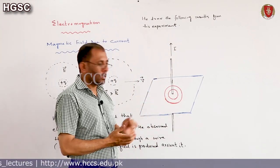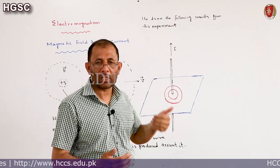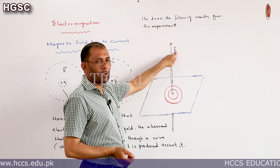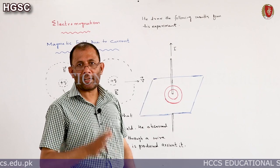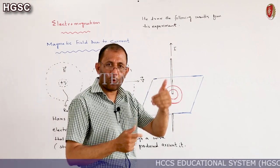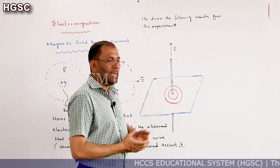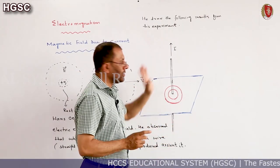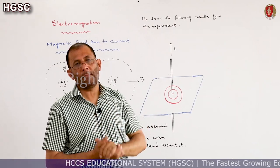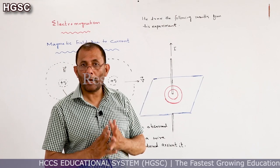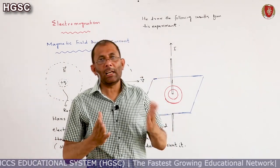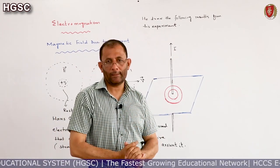Second result: the strength of magnetic field is greater closer to the conductor and decreases as we move away from it. Also, the strength of magnetic field at any point depends on the magnitude of current through the wire and the distance of that point from the wire. Third result: magnetic field lines form concentric circles around the wire, and the direction of these magnetic field lines is determined using the right hand rule — whether they are clockwise or anti-clockwise when viewed from above.